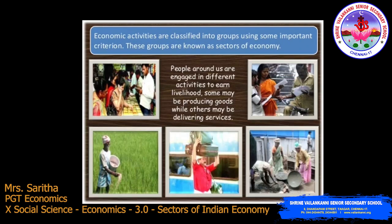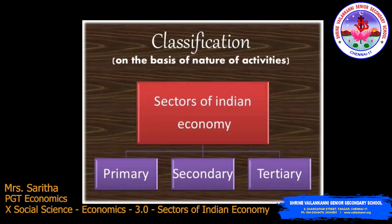Just look at this picture — people around us are engaged in different activities to earn their livelihood. Some may be producing goods while others may be delivering services. For example, a farmer who is doing farming and a postman who is delivering services. These activities are happening around us every minute, and each activity happening in an economy forms what we call sectors.